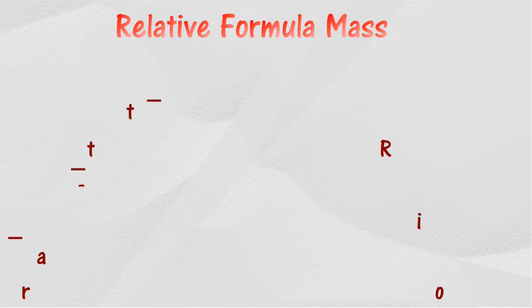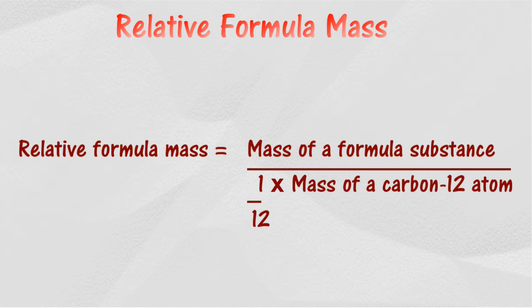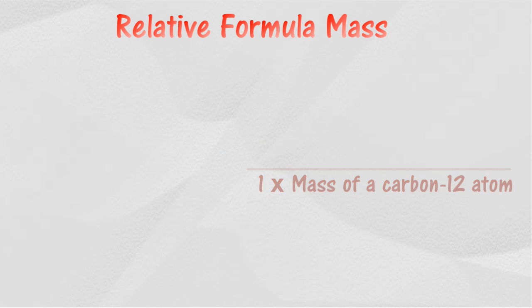For ionic compounds, the term relative formula mass is used to replace the term relative molecular mass. Relative formula mass of an ionic compound is the number of times the ionic compound is greater than 1/12 of the mass of a carbon-12. The method used to determine relative formula mass is similar to the method used to determine the relative molecular mass of a substance, that is, sum up all the masses of relative atomic mass in the ionic compound.